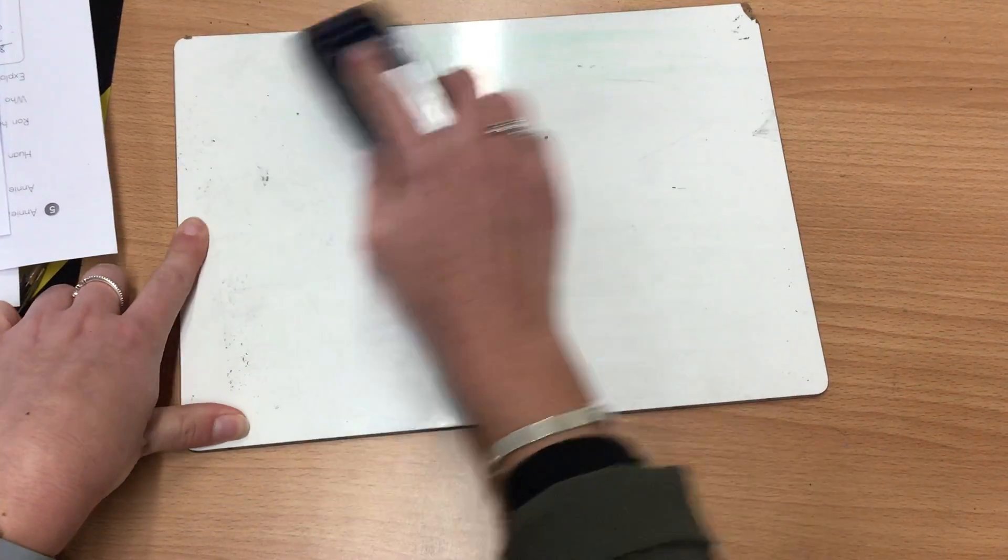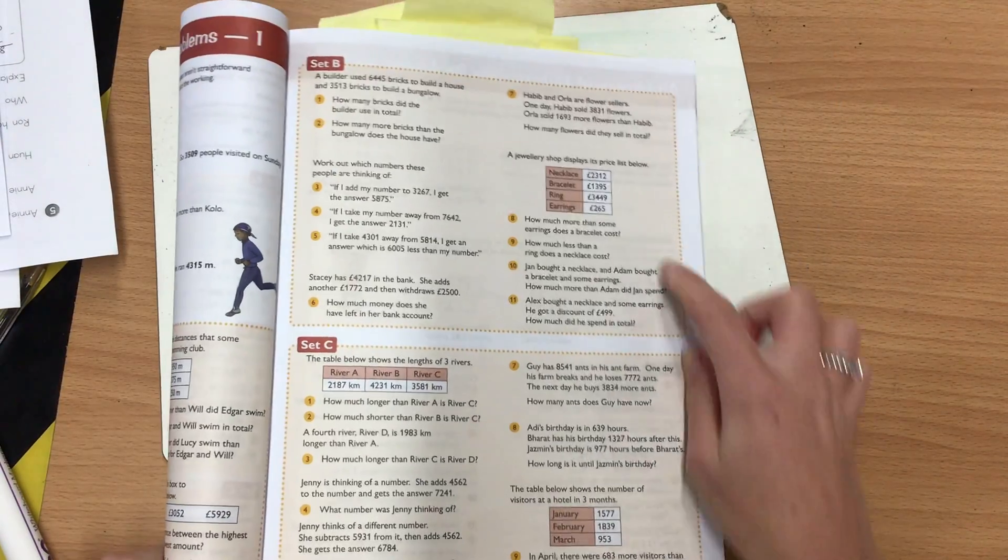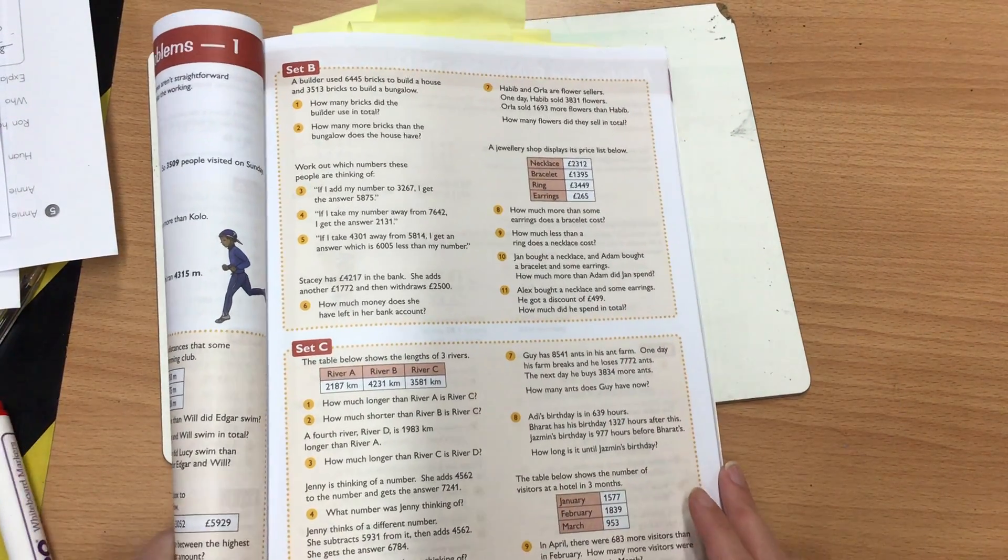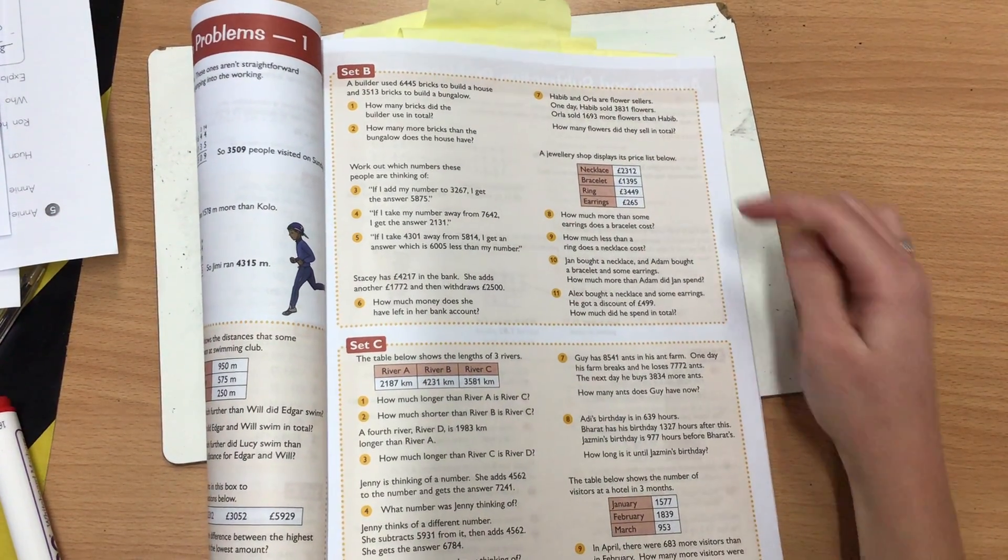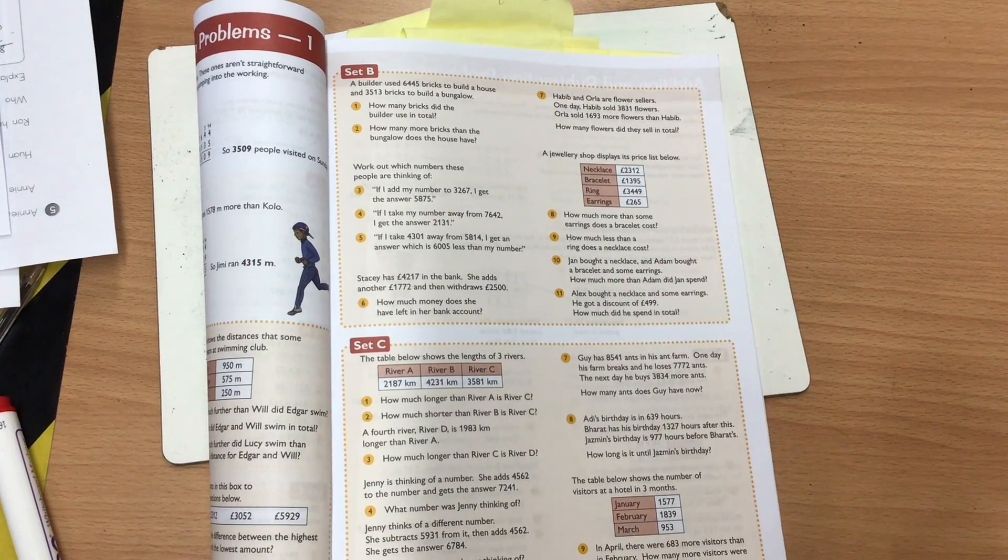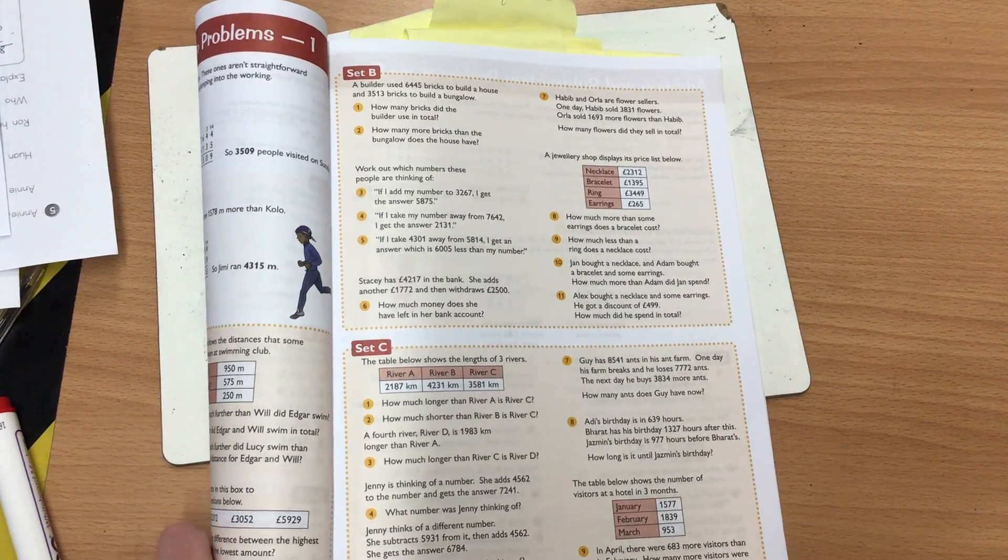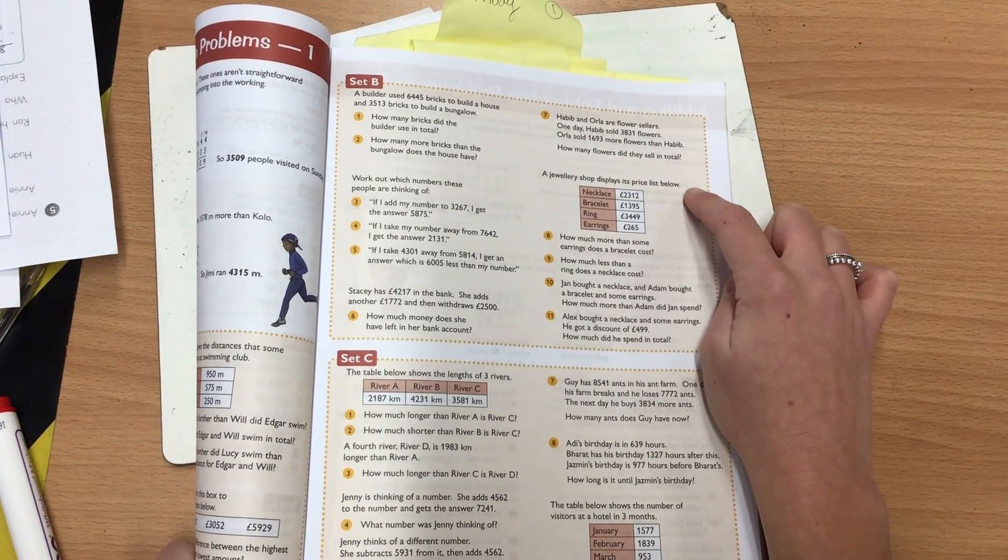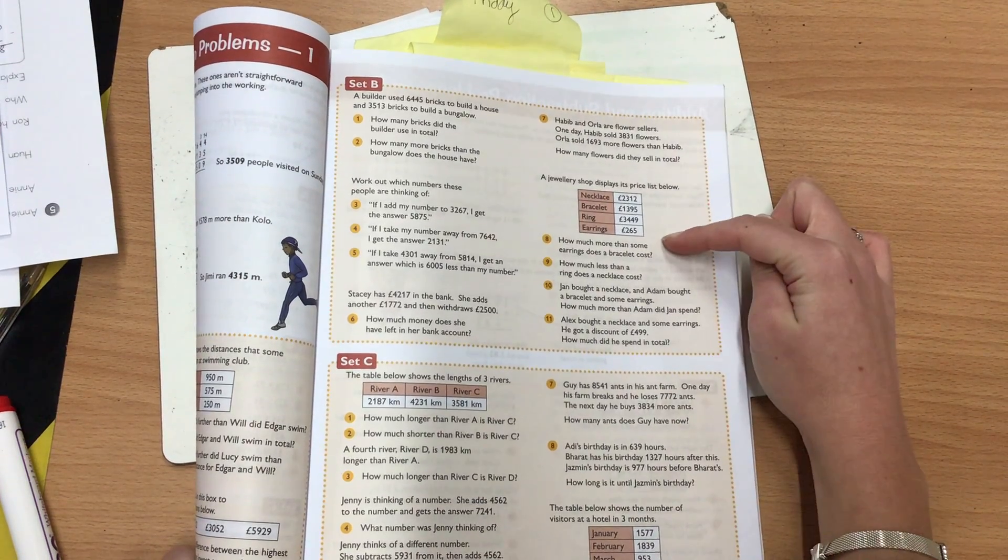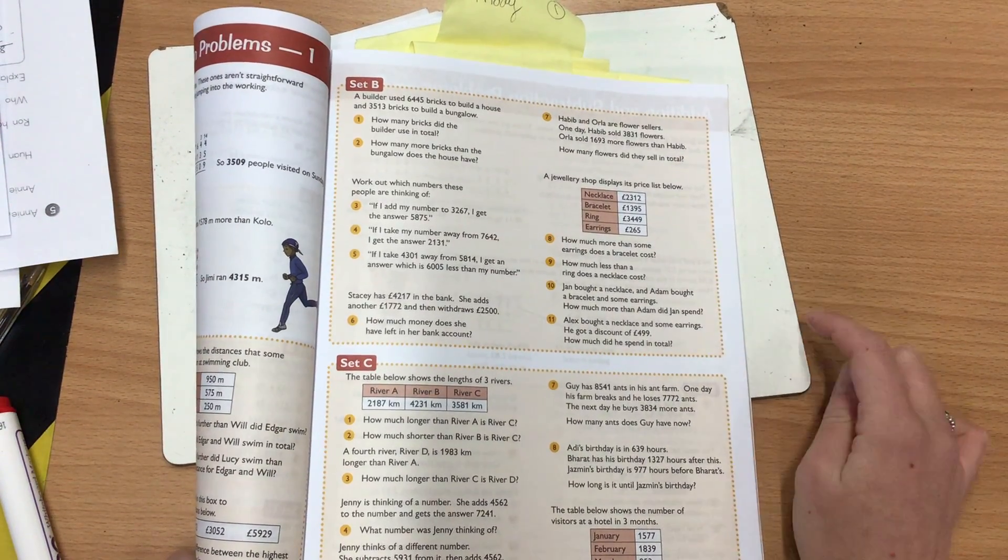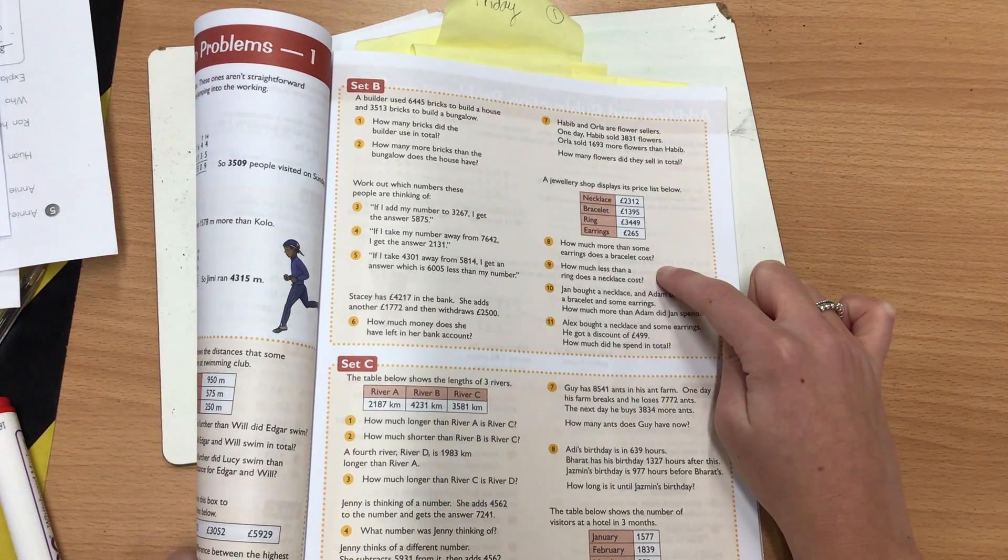So I'm going to show you one of the questions on set B now for us to have a look at. And we're going to look at this one here. There's quite a few questions linked with this one. And we've got to read the table to help us answer these questions. And we're going to have a look at answering question 8 and question 10. So hopefully that will help you when you're answering the other ones. So this is a jewellery shop display, and these are the prices below. So we've got the price of a necklace, a bracelet, a ring, and earrings. And the first question we're going to look at is how much more does some earrings cost than a bracelet?